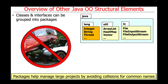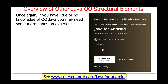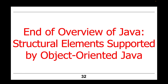In general, packages help manage large projects by avoiding collisions for common names. By organizing the Java class library into packages, it helps to arrange and segregate different pieces effectively, and you should do the same when designing your own large projects. If a lot of this doesn't make sense, you may need more hands-on experience — I strongly recommend taking a look at our Java for Android MOOC available on the Coursera platform to provide that classic object-oriented Java background. That's the end of our overview of structural elements supported by object-oriented Java.